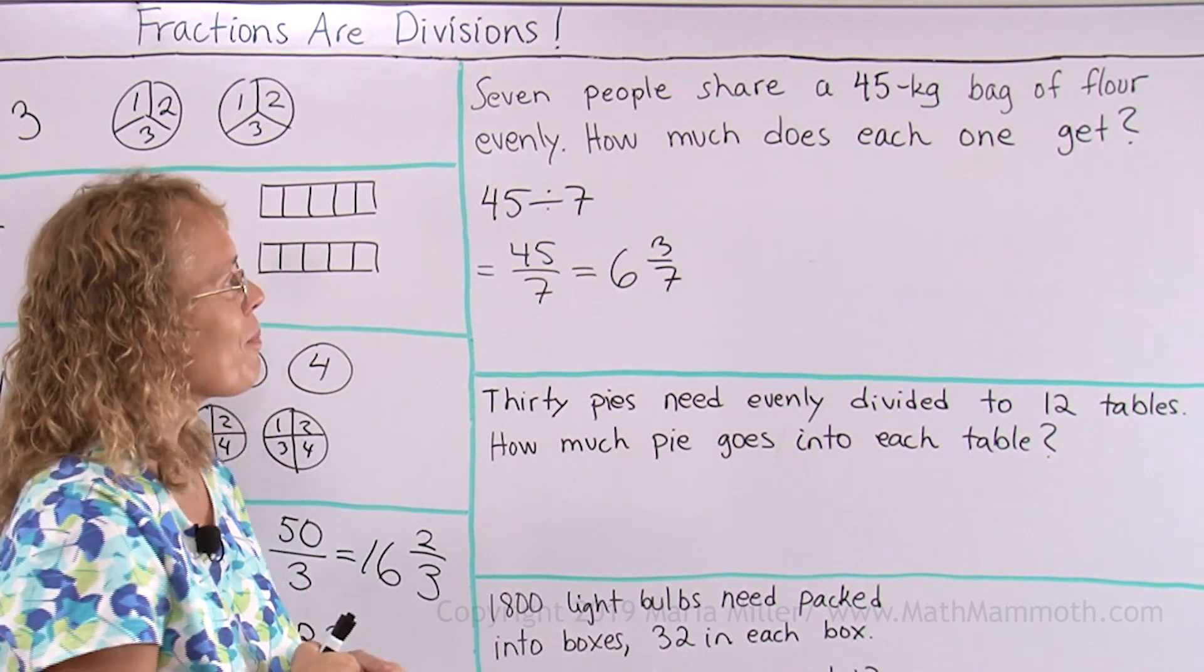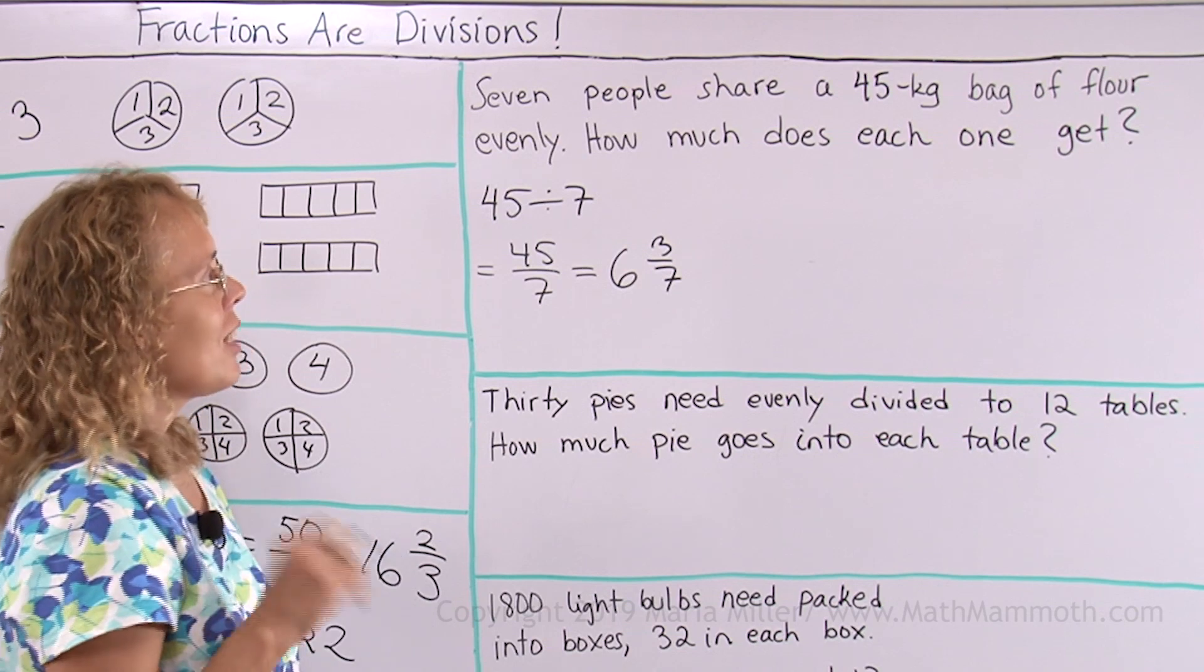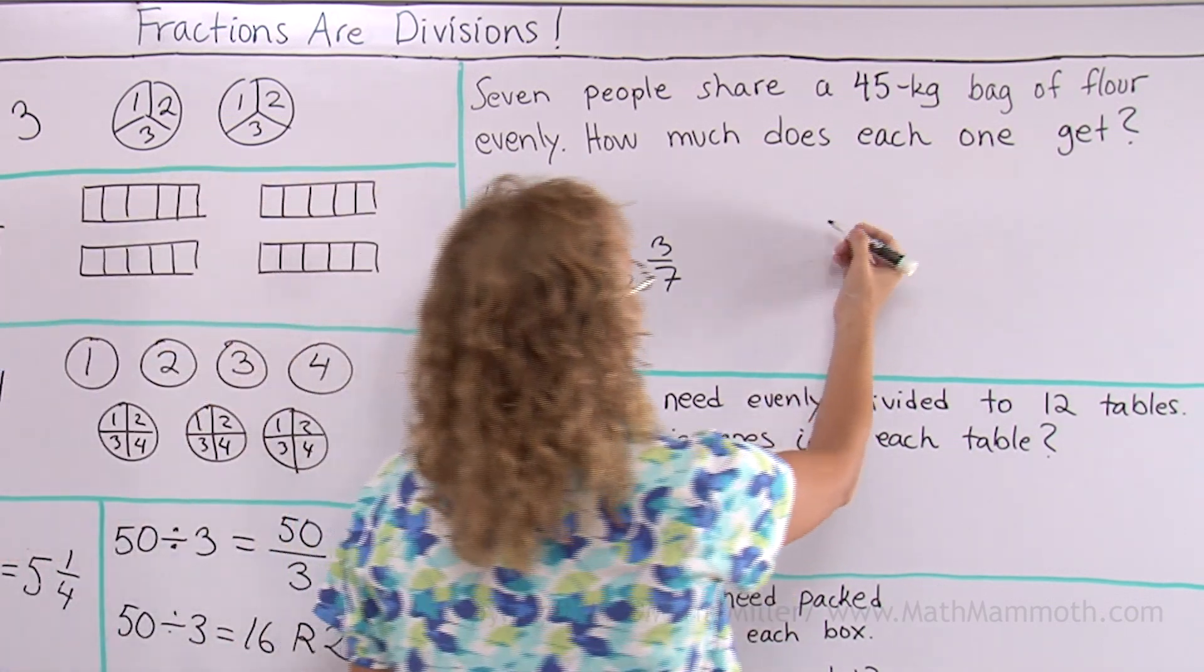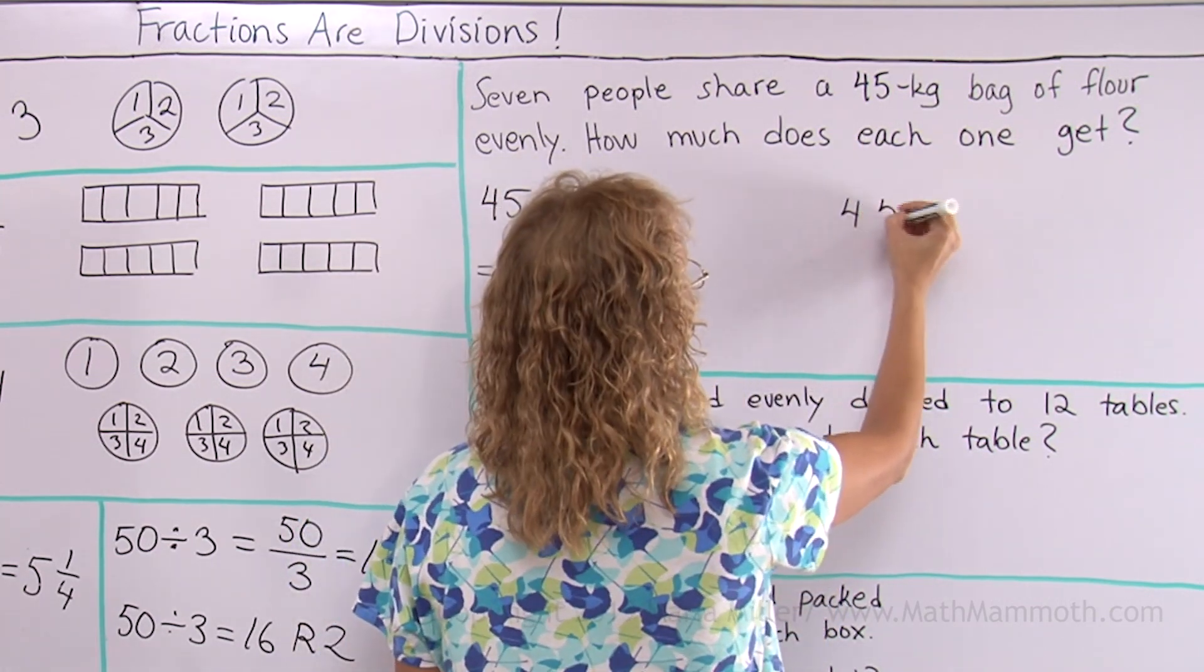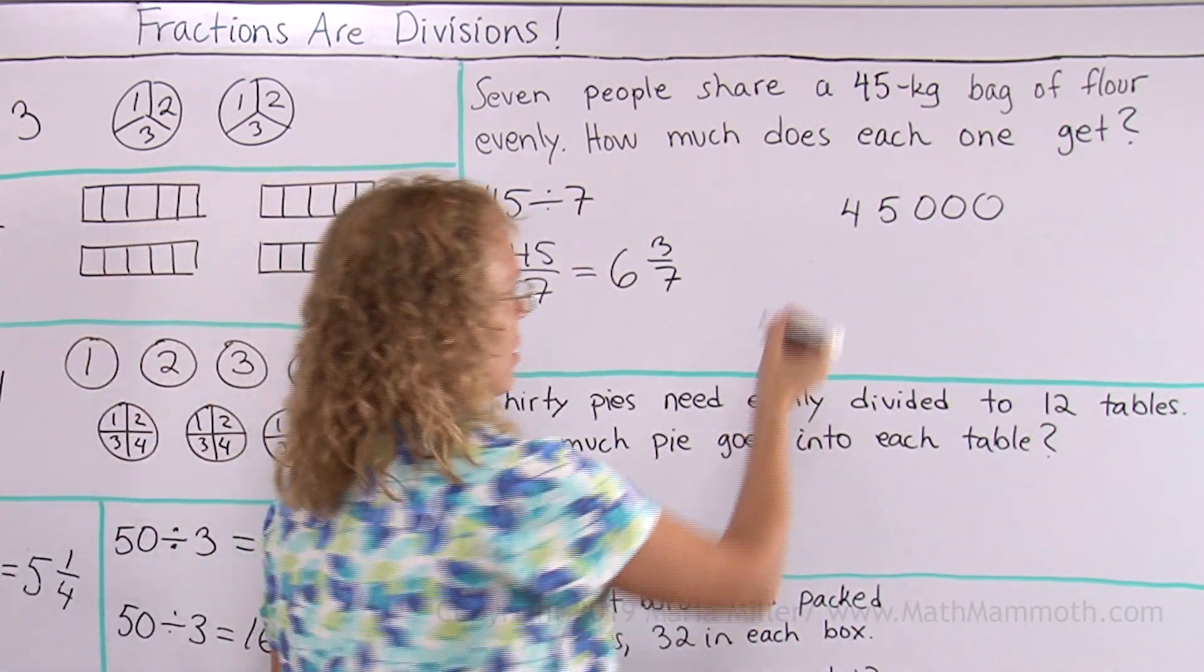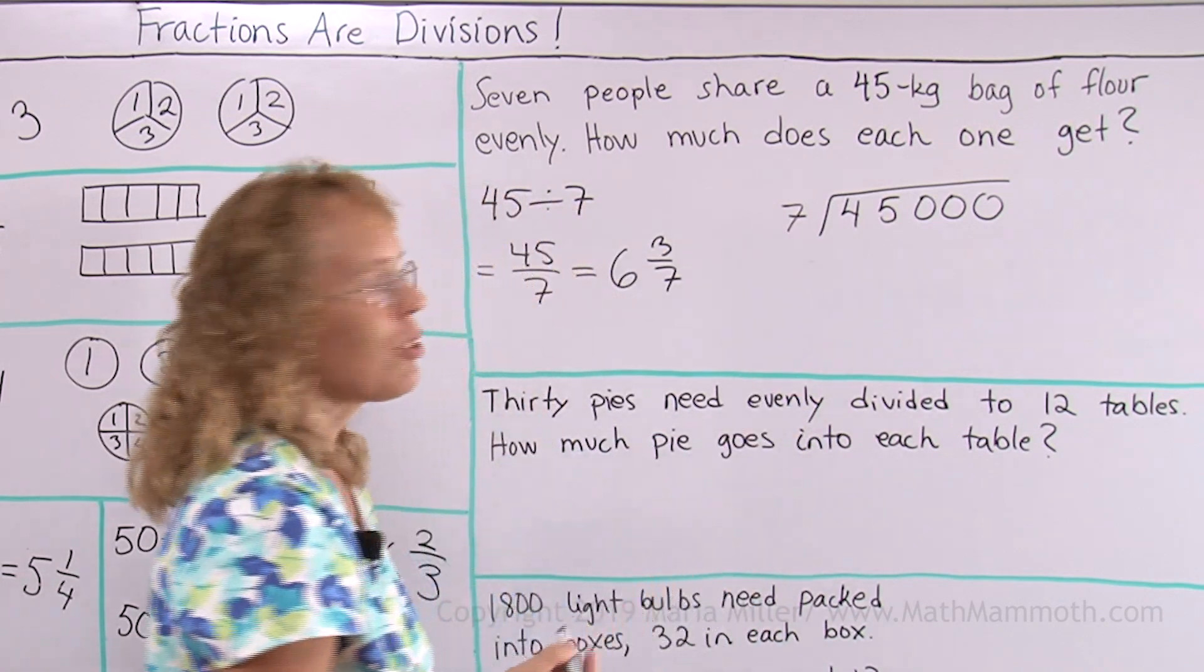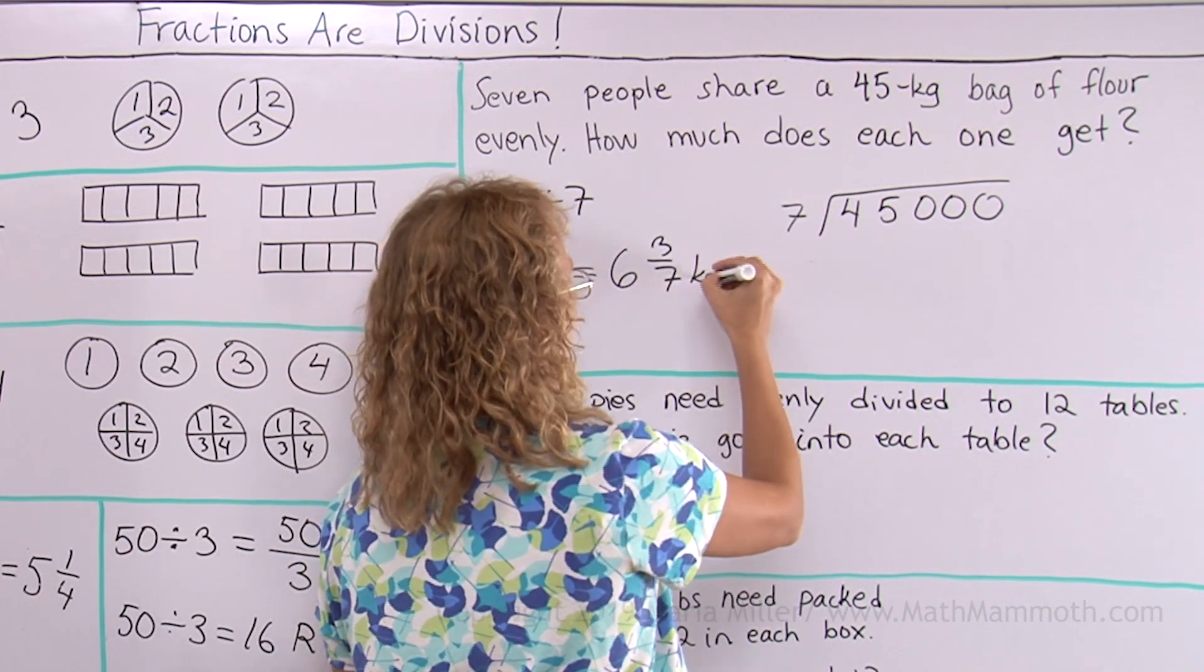So then we can go and divide with long division and get our grams. We can take the 45 kilograms, which is actually 45,000 grams. Divide that by seven and then we will get the gram amount for everybody that you can then measure using your scales. You cannot easily measure that kind of amount, you know, kilograms.